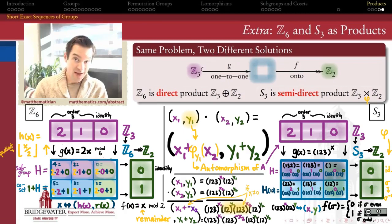But what we've just seen is that even in some fairly basic examples, like Z mod 3 and Z mod 2, there is more than one way, potentially, of forming such a product.